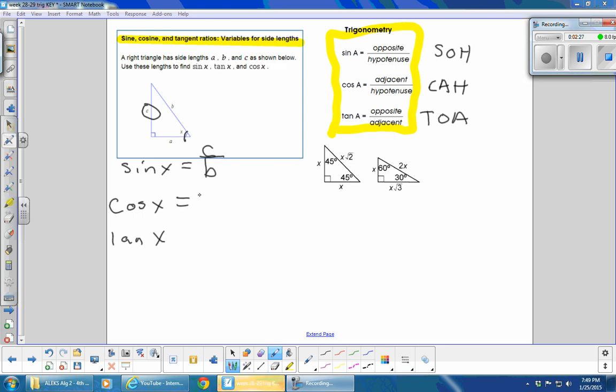Cosine, adjacent over hypotenuse. Adjacent is going to be A, hypotenuse is still B, so it's A over B.